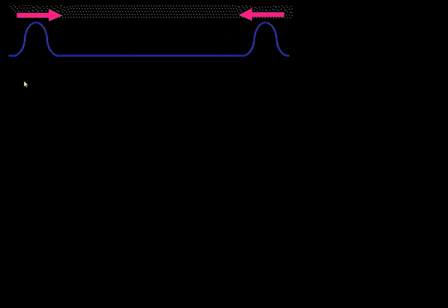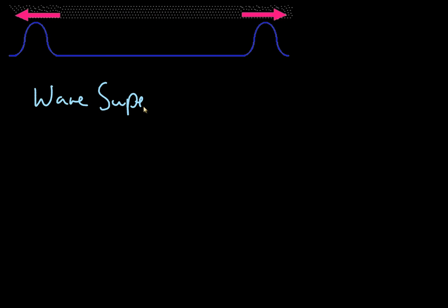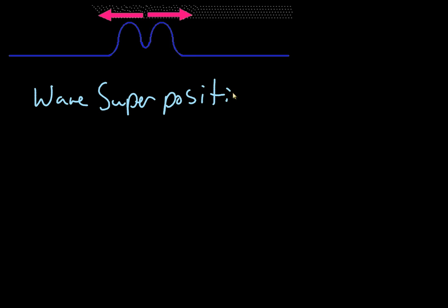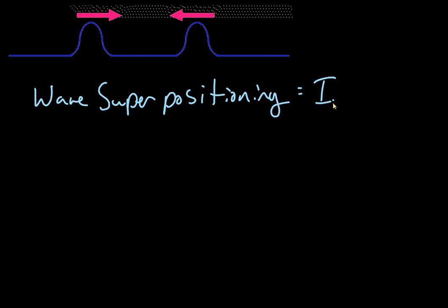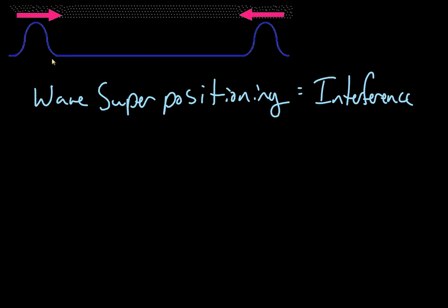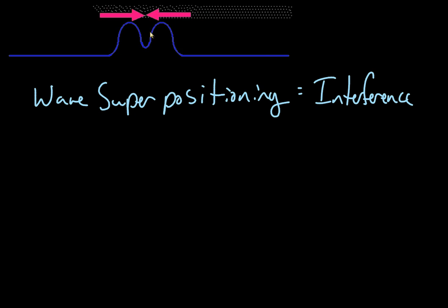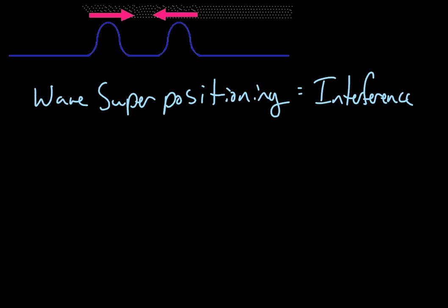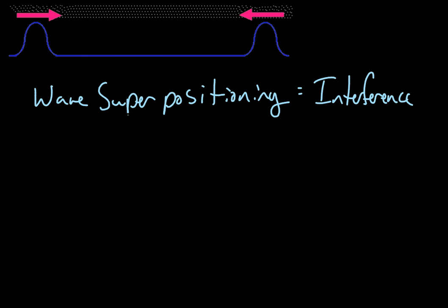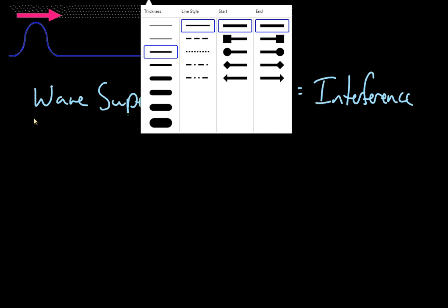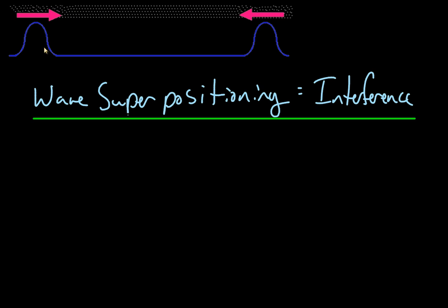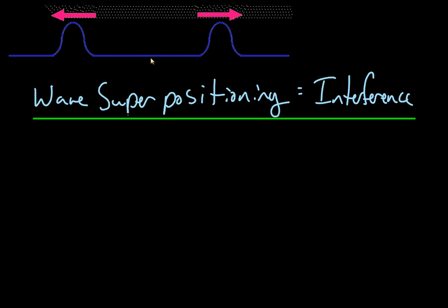Today we're going to cover the topic of wave superposition, which is also called interference. At the top we have a wave that is interfering with another wave — this would be considered constructive interference. This is a fairly simple topic, but what ends up happening is you get asked questions about what happens in situations where the wave shape is not a simple rounded top.